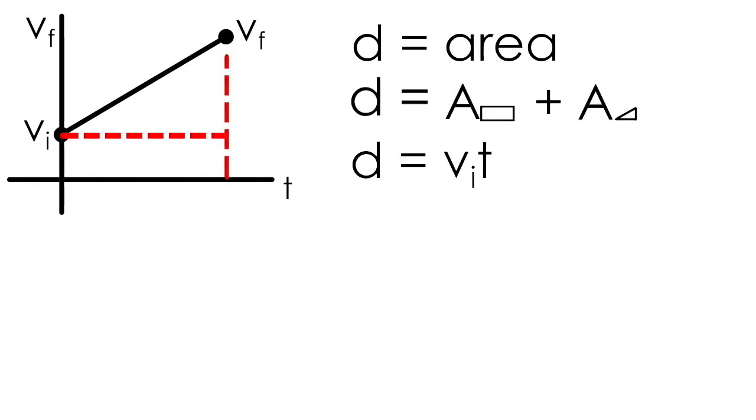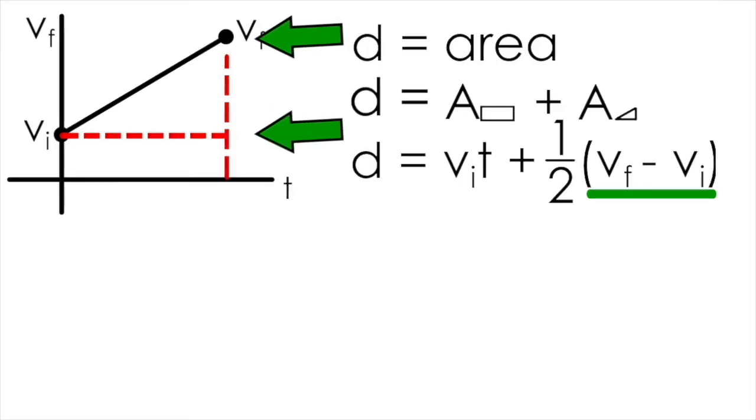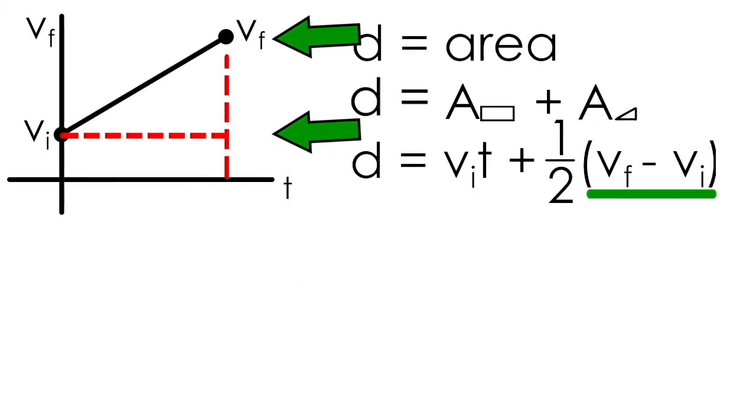We can use base times height divided by 2, the area formula for a triangle, rewritten with what's depicted on our graph. Now the height of just the triangle portion should be the distance between these two green arrows. Taking vf minus vi will give us this distance. The base of this triangle is the same size as the length of our rectangle, which you'll remember is t.